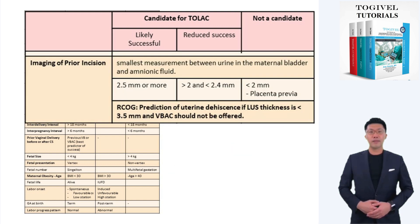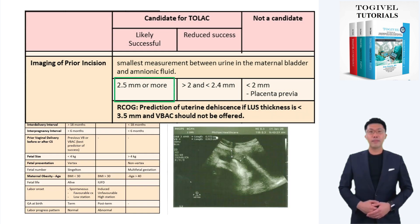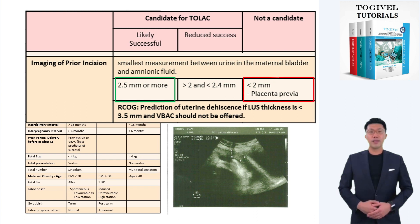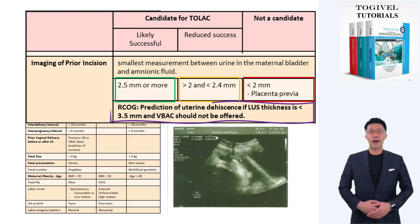Ultrasound examination of scar thickness before TOLAC is essential. A scar thickness of more than 2.5 millimeters is reassuring to offer TOLAC, while a scar thickness of less than 2 millimeters is not considered suitable for TOLAC. In between, a scar thickness of 2 to 2.4 millimeters means TOLAC can be offered but success is not likely. The RCOG guidelines put a clear cut-off thickness of 3.5 millimeters: above that, TOLAC is offered; below that thickness, TOLAC is not offered.